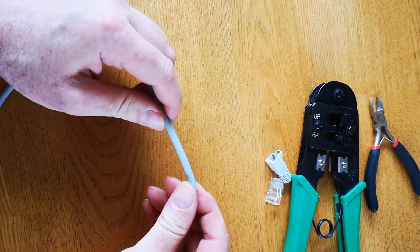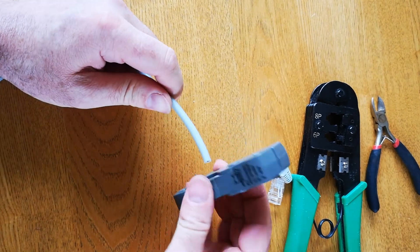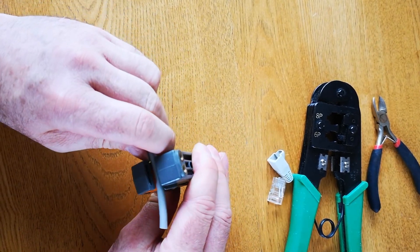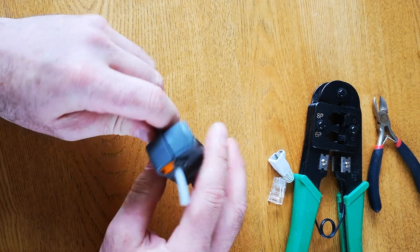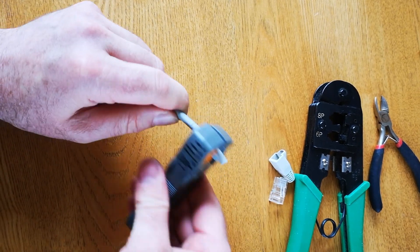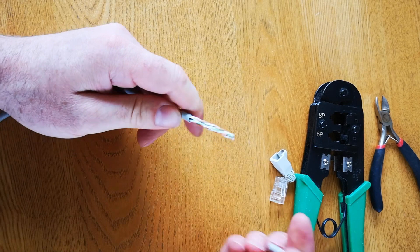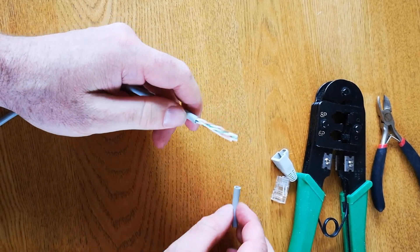Alright, so starting with a Cat5 cable, we're going to use the sheathing stripper first, just to take off up to about 5cm of the outside sheathing. So just roll it around with your finger like that. It cuts the outer sheath, but doesn't cut the inner cores.